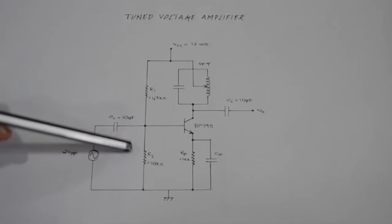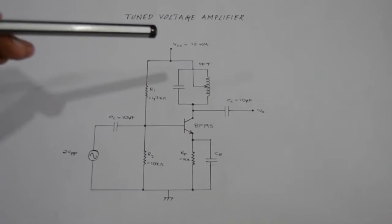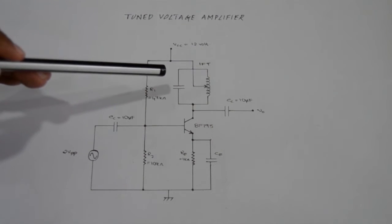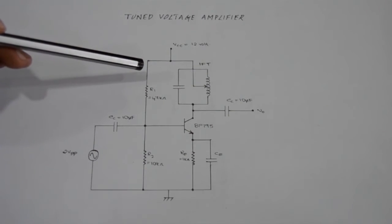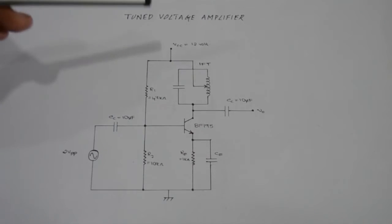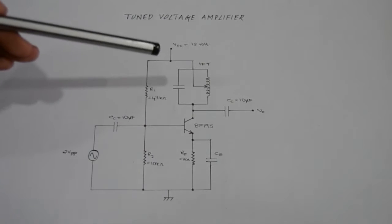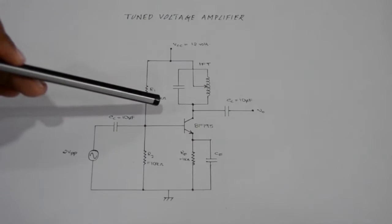This is the voltage divider circuit. The voltage divider circuit is designed with a collector current of 2 mA so that the Q point is fixed at the cutoff of the load line.